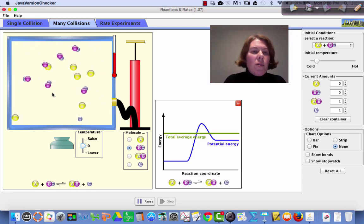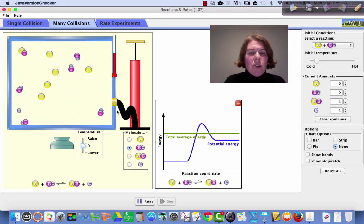As we raise the kinetic energy, we have the ability to have enough speed, and if they hit with the proper orientation, to form products. And one of the products here would be this yellow-purple combination.